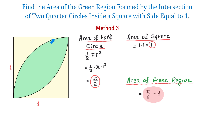These two quarter circles together form a square plus the overlapped region. If we subtract the area of the square, we get the area of this green region, which is π over 2 minus 1. Here we have all 3 methods — please let me know in the comments which method you liked the most, and thank you for watching.